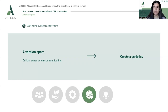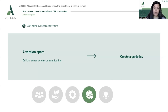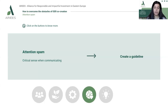When it comes to attention span, there can be some issues with critical communication. Information can get lost in the communication lines and your team might not be able to retain the most important information. Here you can create a guideline with clear information and guides so that everyone knows where they are and what the state of the process is at that moment. Make sure everyone has a checkpoint for information.